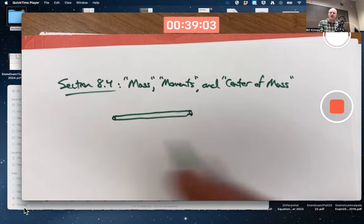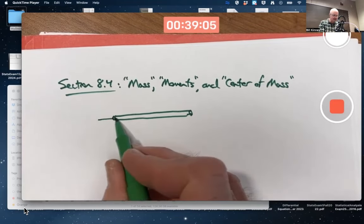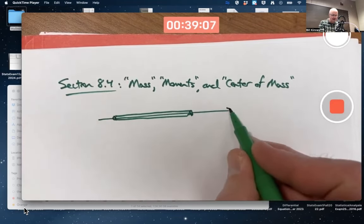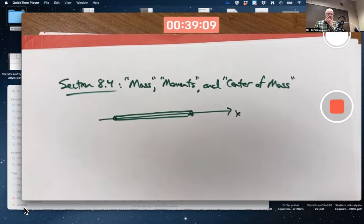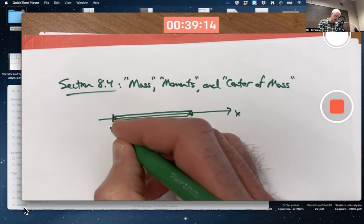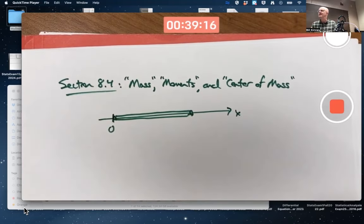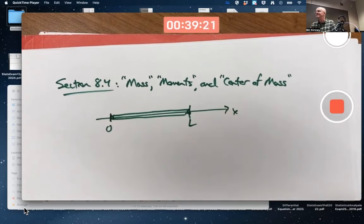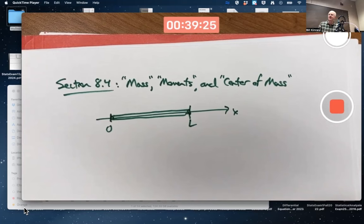It could have a density that's constant. That would be the simplest thing to do. But then there's no calculus, so that's no fun. We want to allow for a density that's not constant.